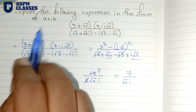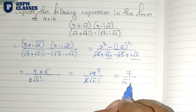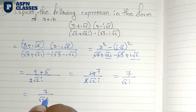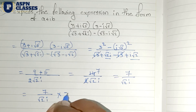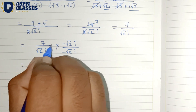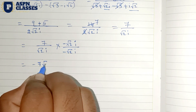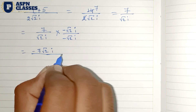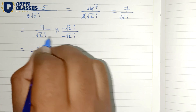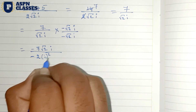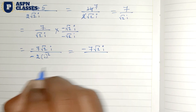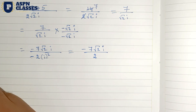Now we have to convert to the a plus ib formula. The result so far is 7 divided by √2 into i. We multiply by minus √2·i over minus √2·i. In the denominator, √2 times √2 is 2, and i times i is i squared, which equals minus 1, so minus times minus gives plus.